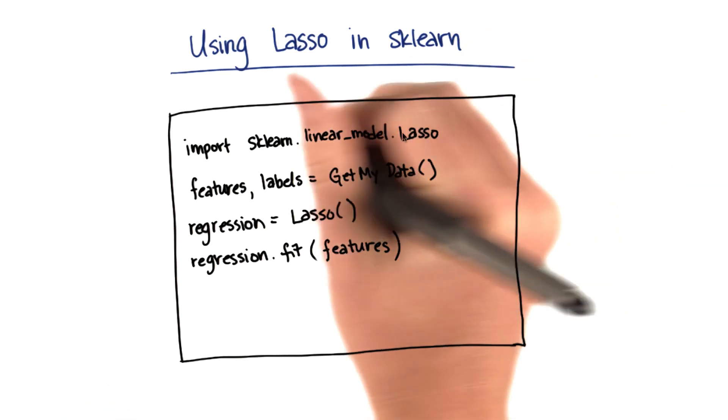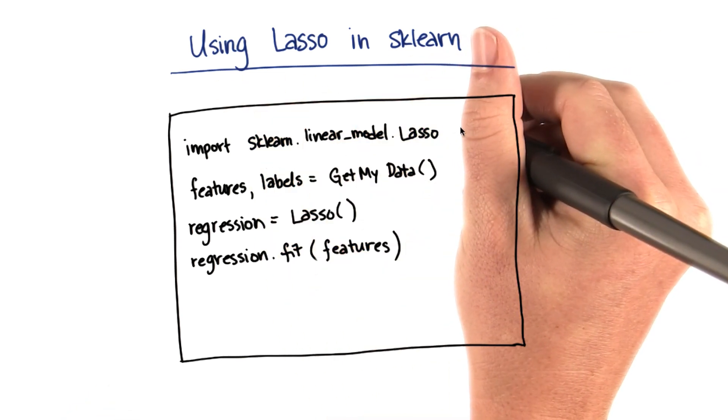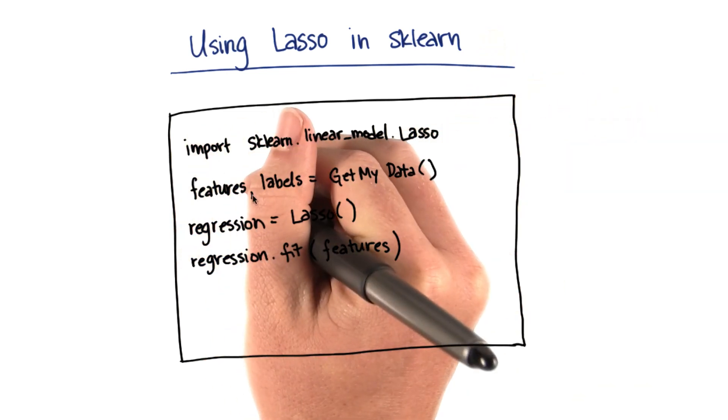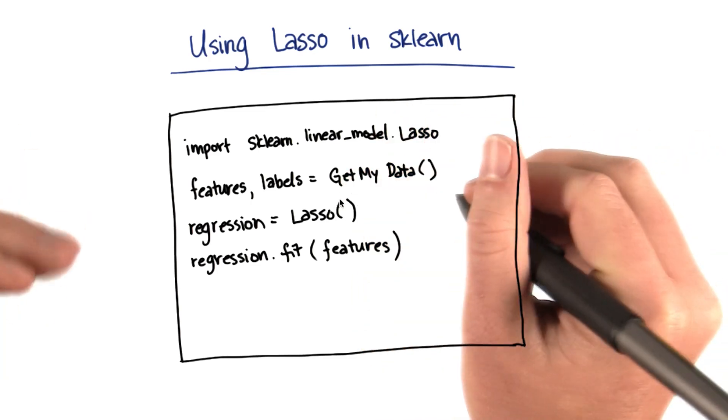So the first thing that I'm going to do is import the lasso model from sklearn.linear_model. The next thing that I do is I get the features for my data and the labels out of a function called getMyData.